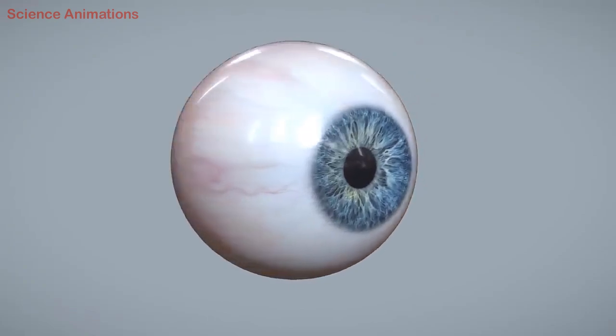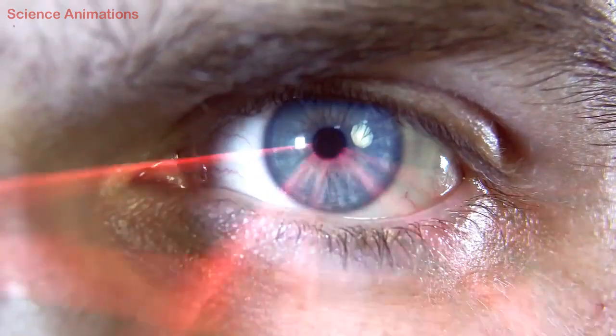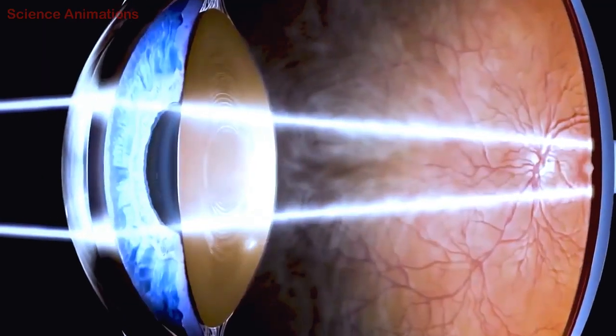The cornea is also present in the outer layer of the eye. The cornea refracts the light rays entering the eye. It is convex in shape.